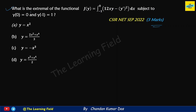Let's start with question one, which is of 3 marks. It says: what is the extremal of the functional Z[y] equal to the integration from minus 1 to 0 of (12xy minus y-dash squared) dx, subject to the given constraints? So here the functional f is equal to 12xy minus y-dash squared. We apply the Euler-Lagrange equation.